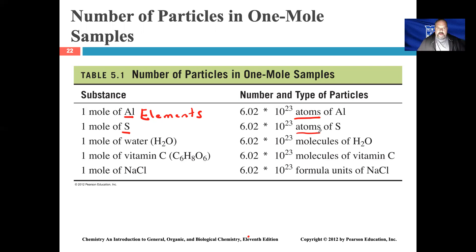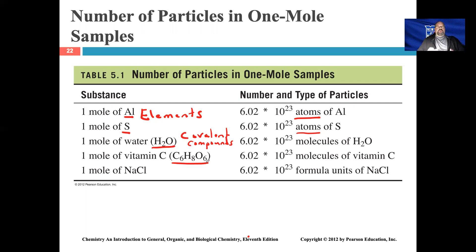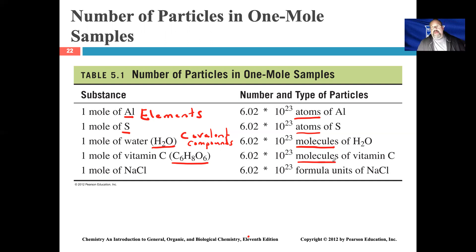For covalent compounds — such as water and vitamin C — if I said go to the lab and get one mole of water or one mole of vitamin C, you would bring me molecules of that compound. One mole of water (H₂O) would be 6.02 × 10²³ molecules of water, and one mole of vitamin C would be 6.02 × 10²³ molecules of vitamin C.